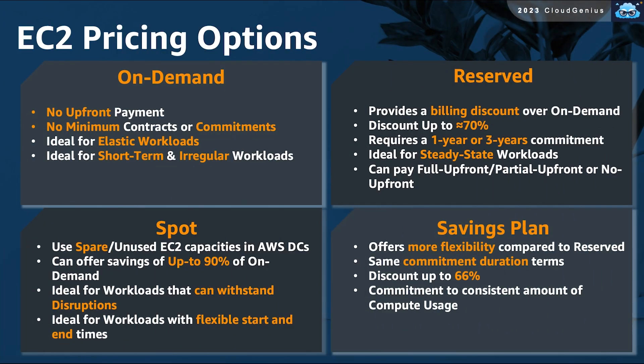We have an important section about the different pricing options for EC2. The default pricing model is on-demand, where you pay per hour or second of your compute consumption. There are no upfront payments needed and there are no long-term commitments. You can power off your instance at any time and stop paying for it. On-demand pricing is ideal for elastic workloads — workloads that are to run for the short term or have changing demand patterns.